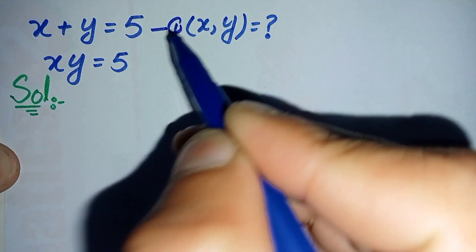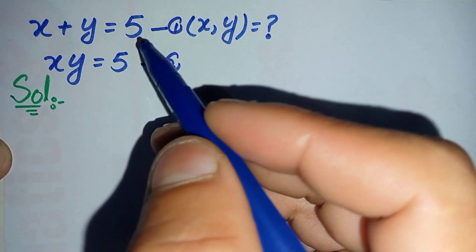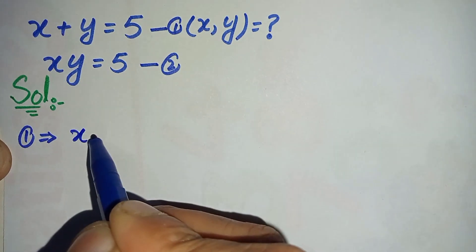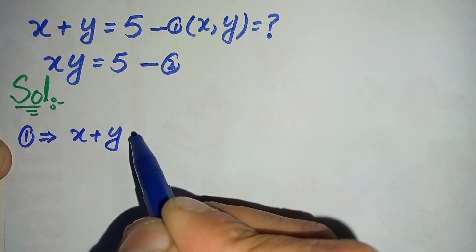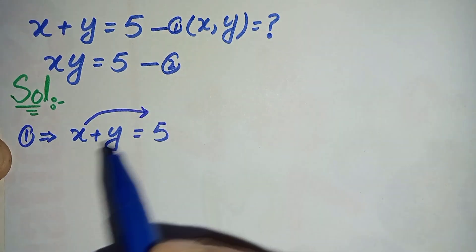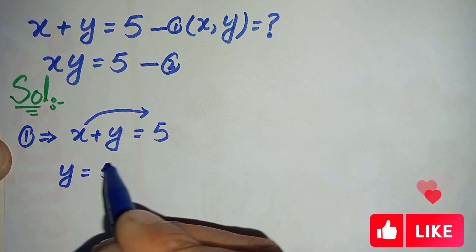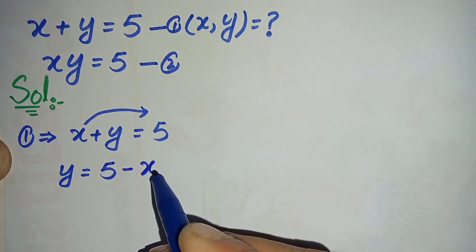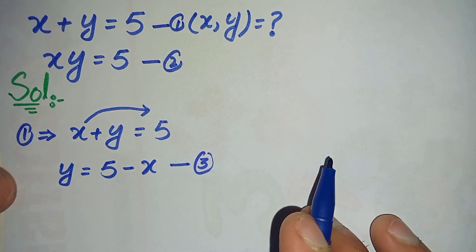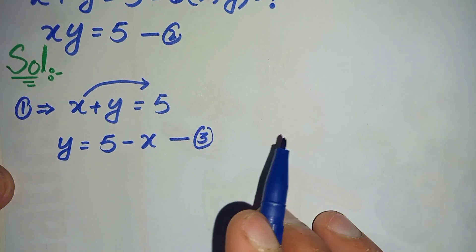This is equation number one and this is equation number two. From equation number one, we can write: x plus y is equal to 5. We will shift x to the right-hand side, so this equation will become y is equal to 5 minus x. Let us call this equation number three.